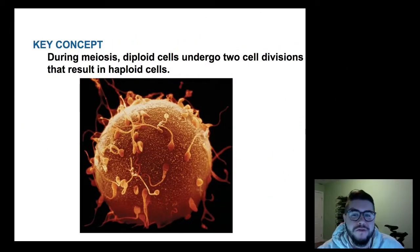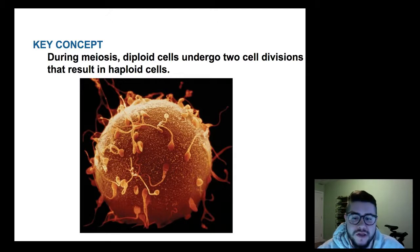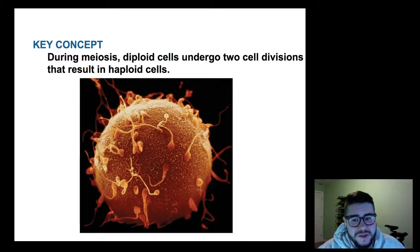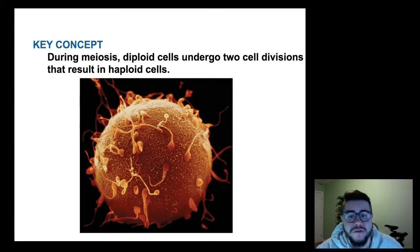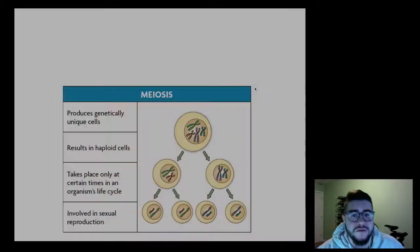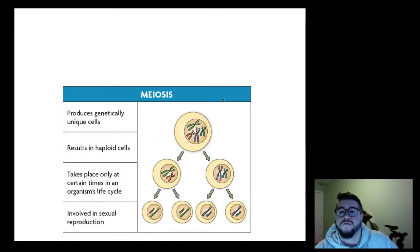Hello everybody, today we're going to be starting our first topic of genetics, which is meiosis. Meiosis is going to act as the basis of our genetics unit, because meiosis makes unique haploid cells, or sex cells — cells that are capable of being combined together during sexual reproduction. So let's start with our basic overview.